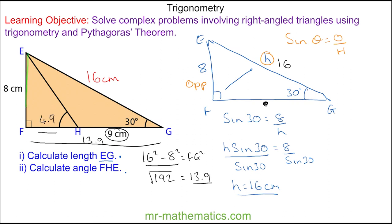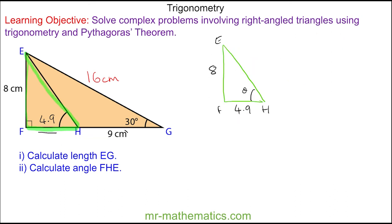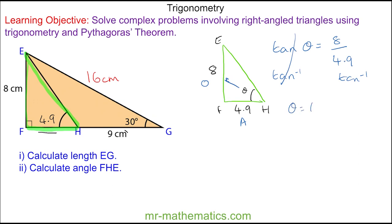So now I can work out angle H using the right angle triangle highlighted in green. Because we've been given the opposite, which is 8, and the adjacent, which is 4.9, we're going to use tan. So the tan of the angle theta is the opposite (8) divided by the adjacent (4.9). We'll take the arc tan of both sides, and these will cancel, so theta is the arc tan of 8 divided by 4.9, which works out as approximately 58.5 degrees.